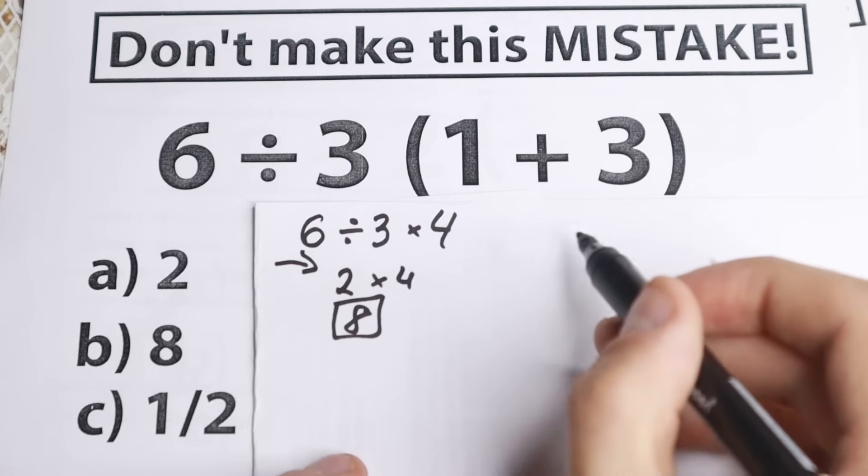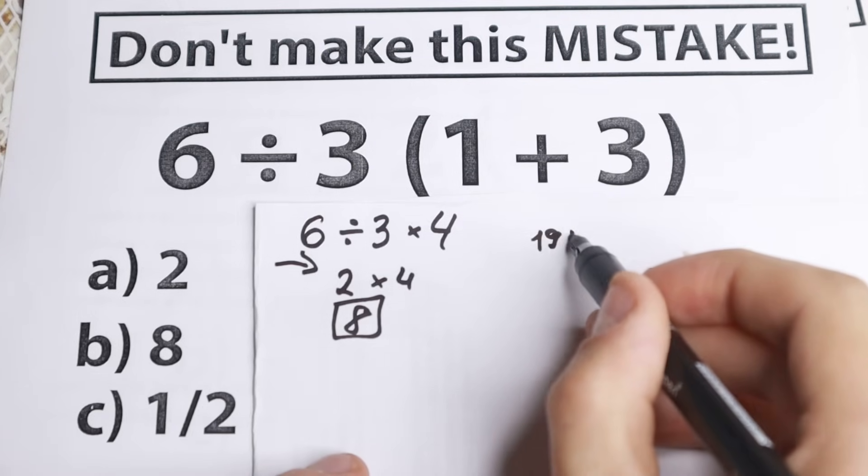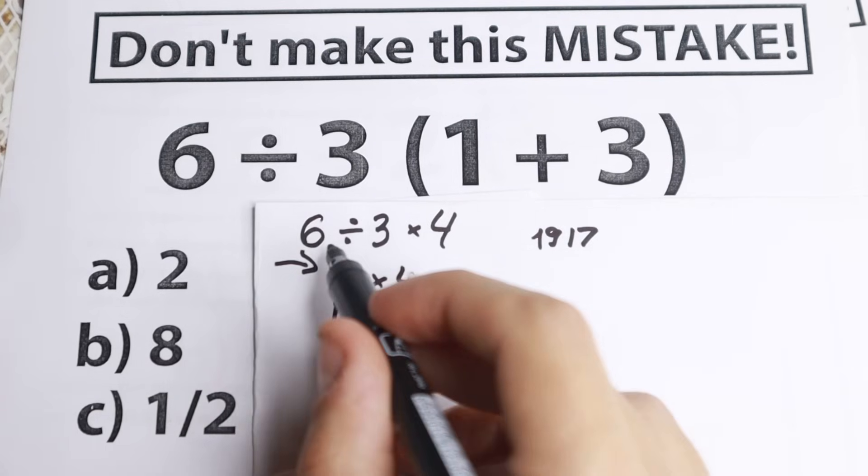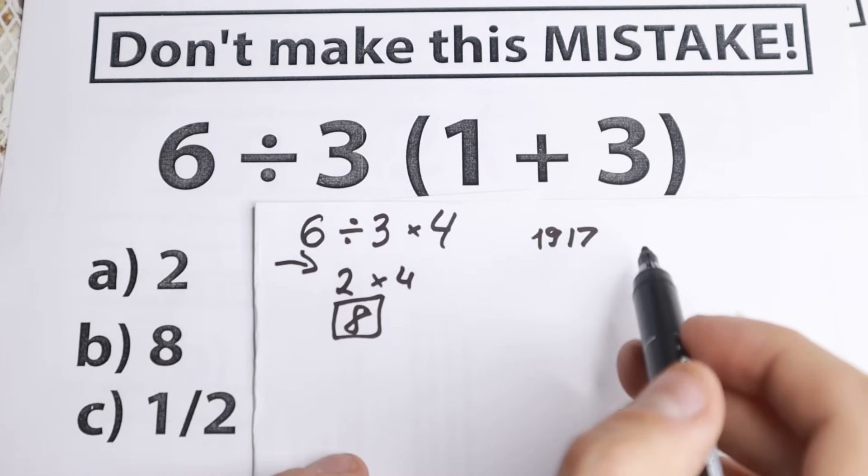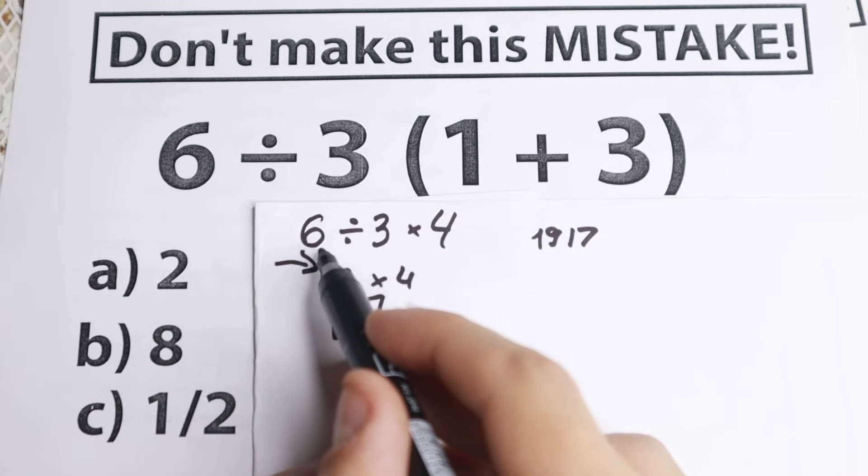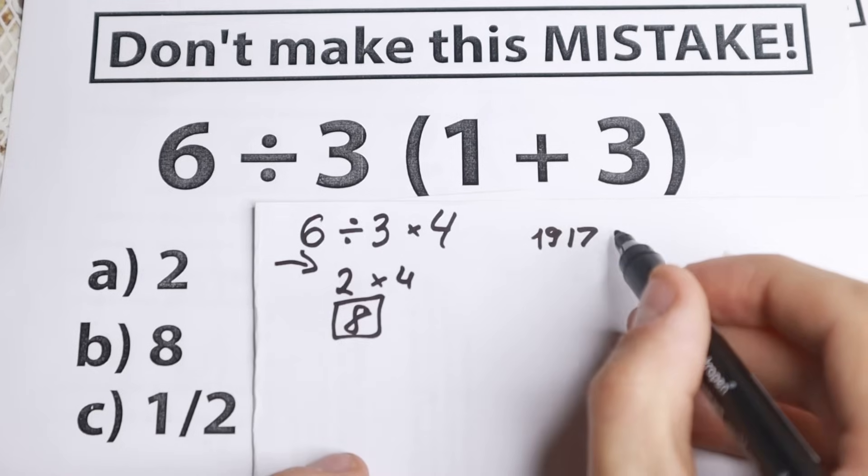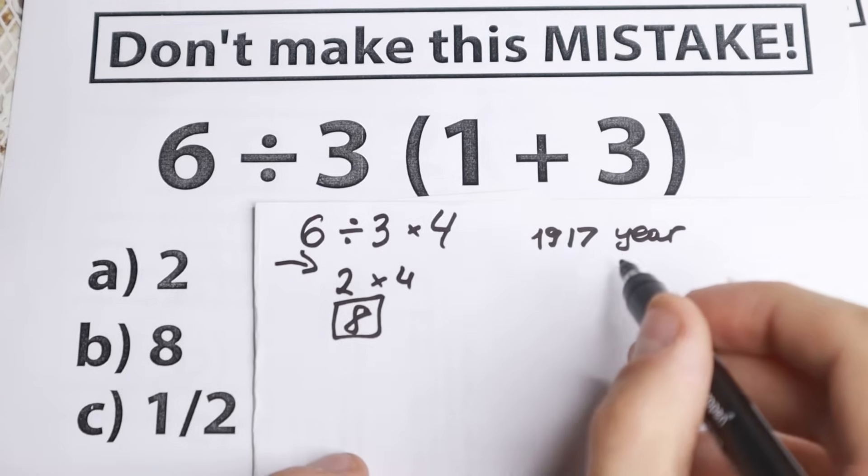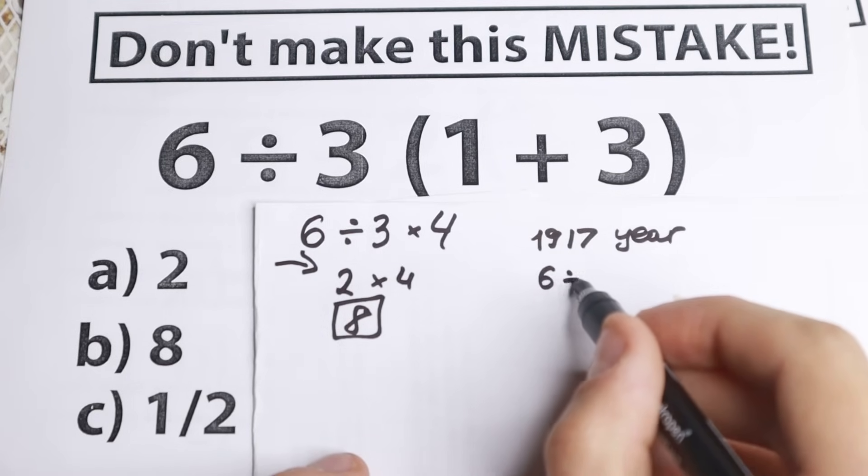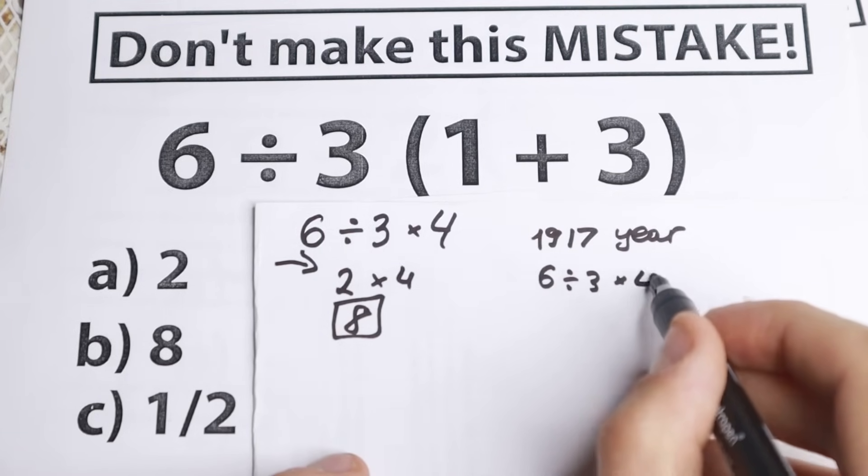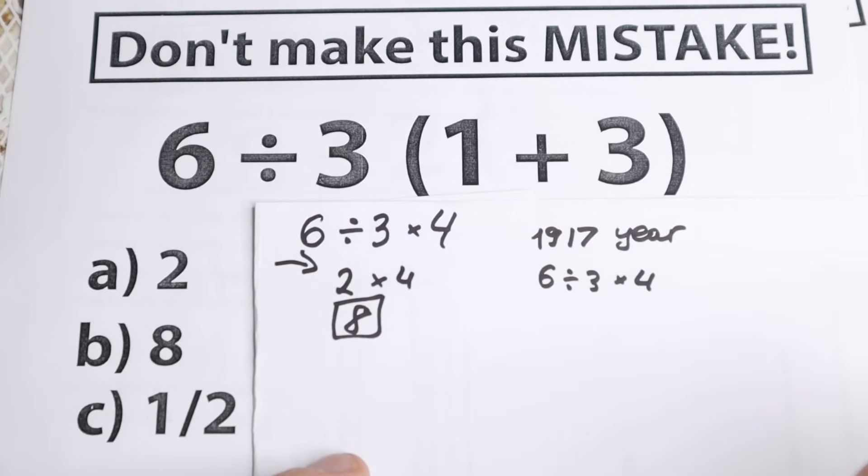Suppose it was 1917 and you saw this expression: 6 divided by 3(1 plus 3), or 6 divided by 3 times 4 in a textbook. What do you think the author was trying to write?